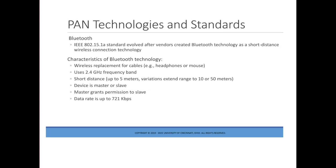Bluetooth was named after a late 10th century King of Denmark and Norway, King Harald Bluetooth, and was invented in Denmark. Bluetooth, the IEEE 802.15.1 standard, evolved after vendors created it as a short-distance wireless connection technology. Characteristics include wireless replacement for cables such as headphones or a mouse, use of the 2.4 GHz frequency, and a short range of up to 5 meters, with variations extending to 10 or 50 meters. One device acts as a master and another as a slave, with the master granting permission to the slave. The data rate is up to 721 kilobytes per second.